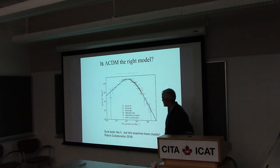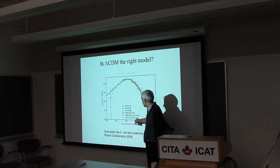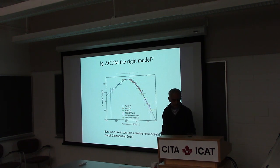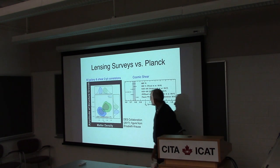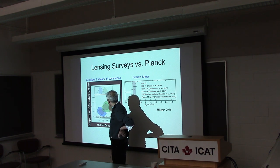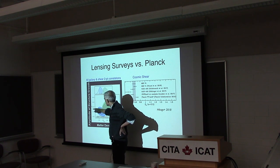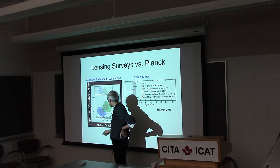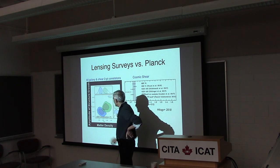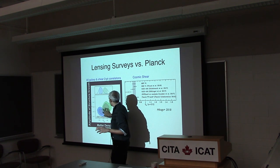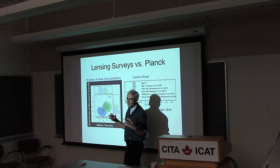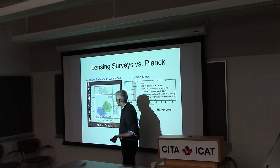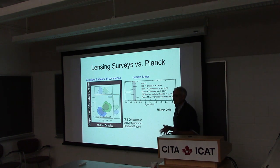At first brush, CMB, redshift space distortions, Lyman alpha, and lensing all line up with the lambda CDM model — five orders of magnitude on the y-axis. But looking more closely, comparing DES and Planck in S8 — some combination of sigma-8 and omega matter — depending on whether you work in two-dimensional, one-dimensional, or the full six-dimensional parameter space, or the 50-dimensional parameter space of nuisance and cosmology parameters, you can get different answers to whether there is a tension or not.